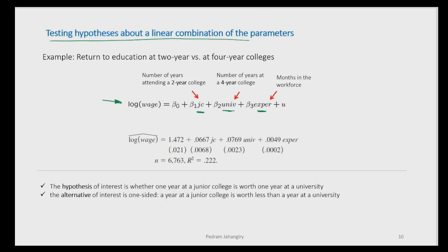You may have attended an undergraduate college or a junior college. We're interested in seeing what is the effect of one extra year in junior college on wage, and one extra year of university college on wage. If we go ahead and use OLS, these are the numbers. Using a log-level model, the signs are positive — not surprising. Let's interpret these two coefficients: one extra year in junior college leads to a 6.6 percent increase in hourly wage.